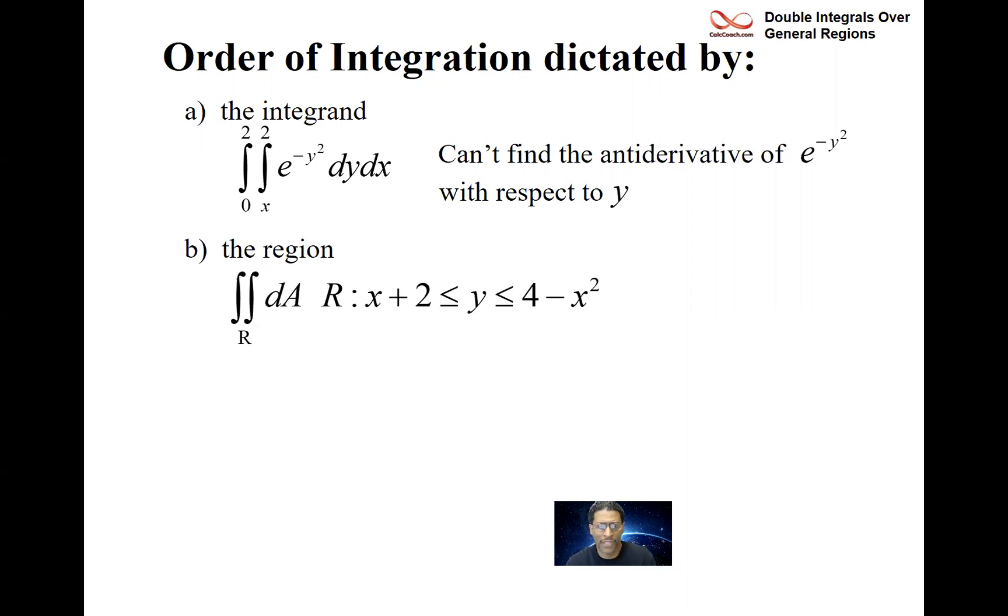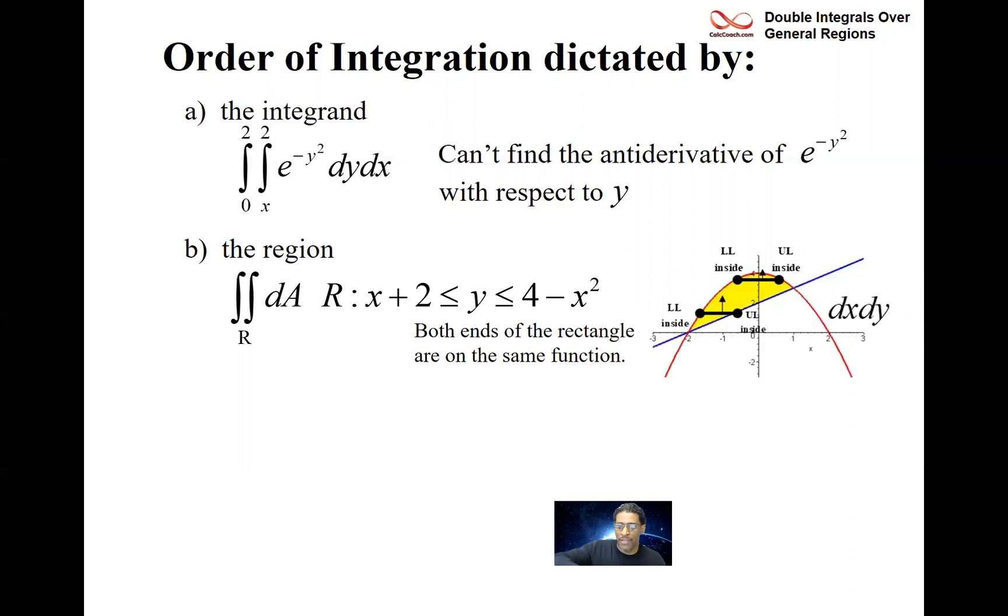So here's an example. We have the region defined as being between the curves x plus 2 and 4 minus x squared. If you look closely at the graph, the 4 minus x squared is a parabola which opens downward, the x plus 2 is an upward sloping line, and if you were to try it as dx dy,